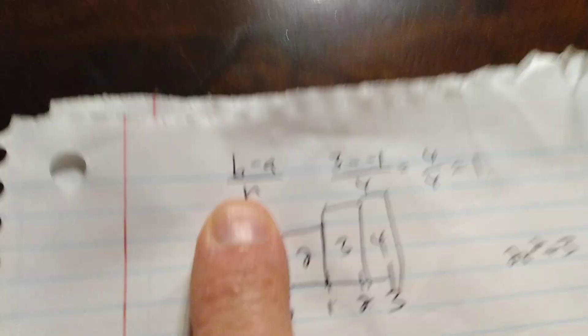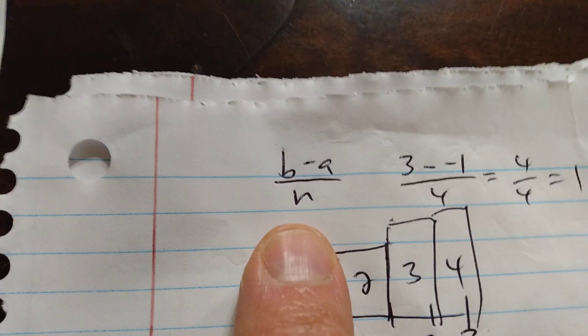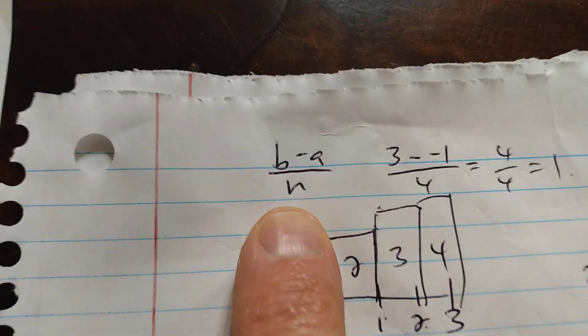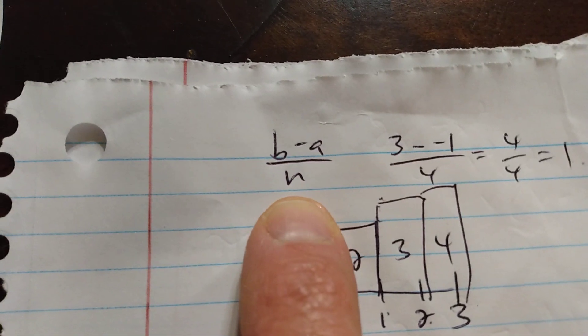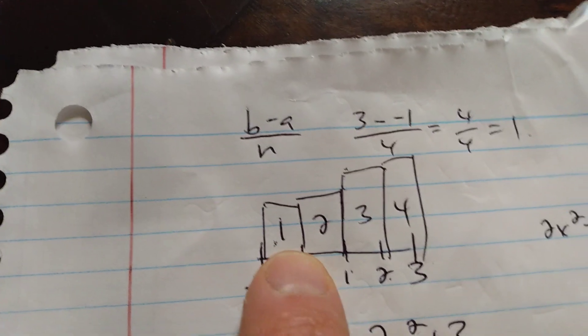So b minus a over n, that's a common thing. That is, in rectangle rule, this is the base of your rectangle, the bottom.